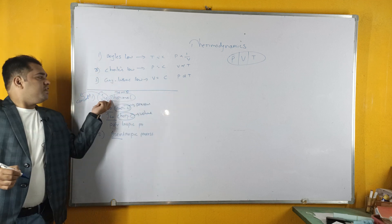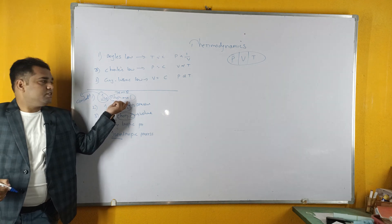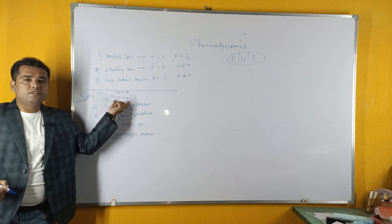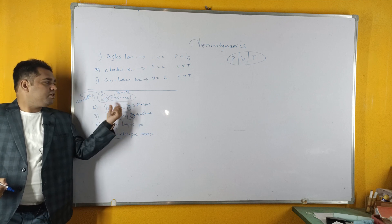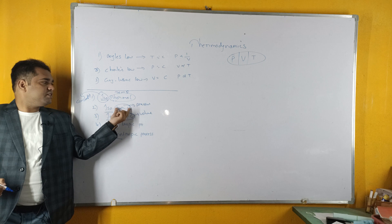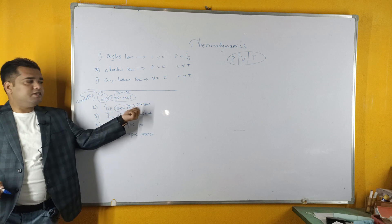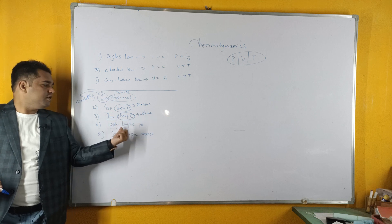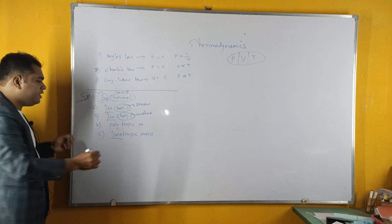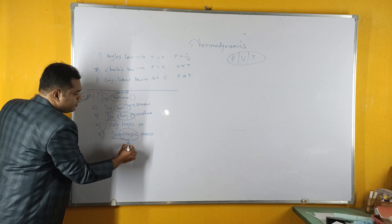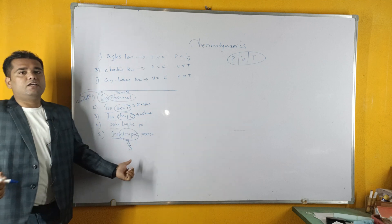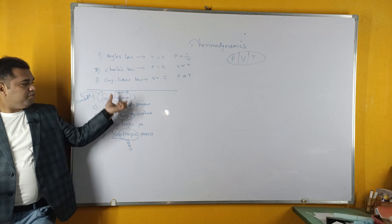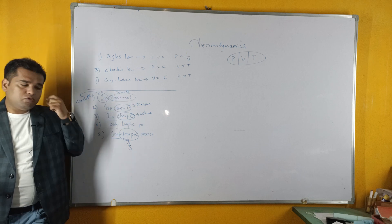So the isothermal process is the process having constant temperature. The isobaric process is the process having constant pressure. Entropy is indicated by S, and it is another property we will discuss in further classes. These are the basic five processes we are going to study.